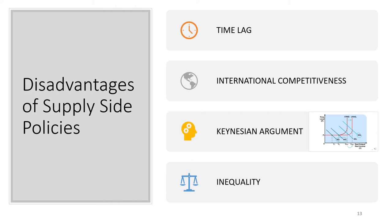However, there are also disadvantages to supply side policies. Firstly, the time lag: unlike demand side policies, which tend to have a relatively quick impact on the economy, it takes a long time to reap the benefits of supply side policies. There is a lag between initial investment and effects on long-run aggregate supply. For example, improving the skills base of students will only amount to improved labour productivity when those people go to work, which may not be for many years. Secondly, international competitiveness: if other countries are also enacting similar supply side policies, domestic companies may not experience any relative advantage, so the improvement to the current account may not be significant.